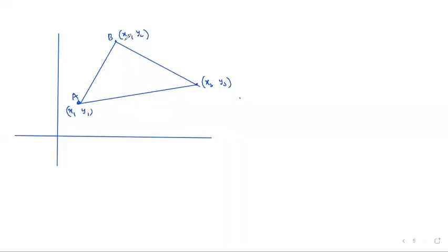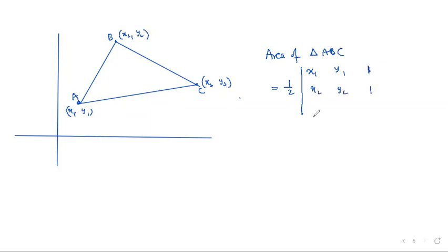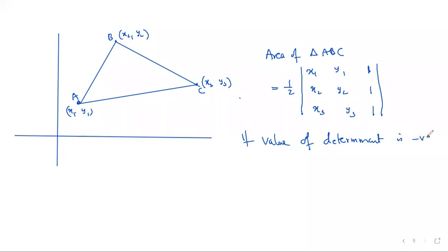Another application of determinants: finding the area of a triangle when vertex coordinates are given. Area of triangle ABC = (1/2) × |X1 Y1 1 / X2 Y2 1 / X3 Y3 1|. If the value of the determinant happens to be negative, take the modulus — area cannot be negative, so always take the positive value.